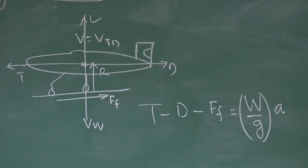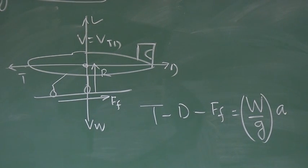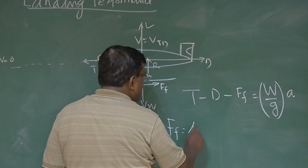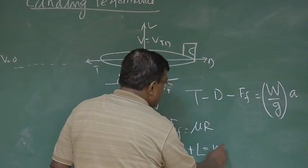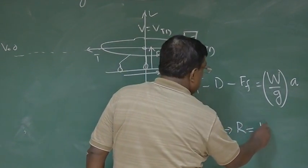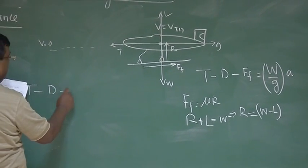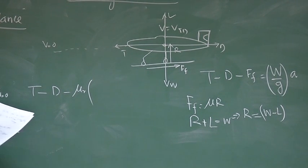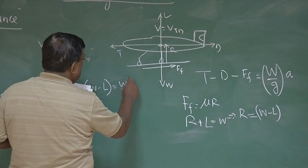Now, once I write the equation, I get T minus D minus F_F is equal to W by G into A. But as I understand now, that drag is proportional to speed square. So, ideally speaking, A will change, A will not remain constant. And also, I see that F_F, I can write as μ into R and R, I can find out R plus L is equal to W. So, R is nothing but W minus L. So, this equation becomes T minus D minus μ_R into R, that is W minus L equal to W by G into A.